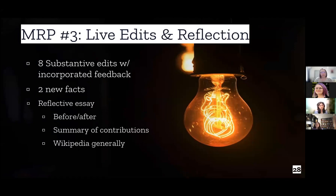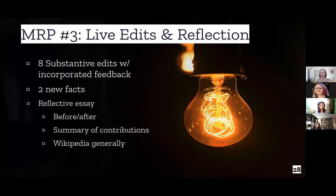For their final MRP, students incorporate the instructor feedback from MRP2 and make those edits live — this is when they're actually in Wikipedia editing it. Additionally, they need two more facts, so we're sending them off on their own without as much support. Then they write an essay about their Wikipedia experience. The reflective essay is where students describe their before-and-after experiences with Wikipedia — shifting from a consumer to a creator — give a summary of their contributions, and reflect on what they learned from this experience and how it might apply in their life moving forward.